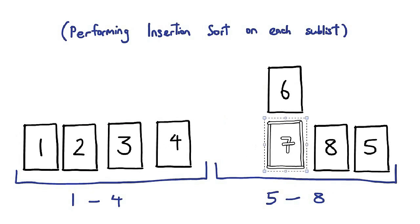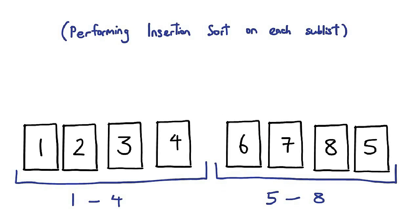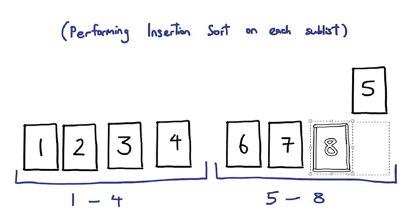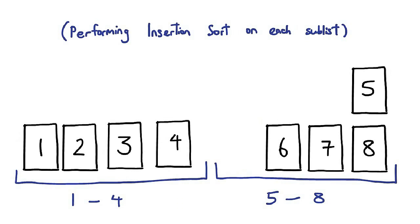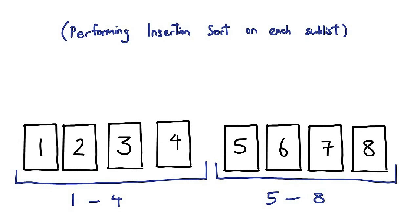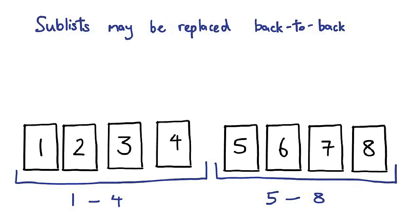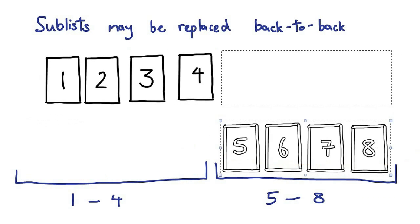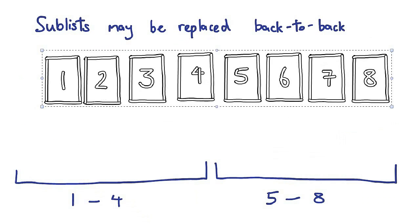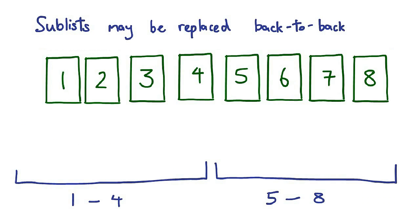And the way in which I created my buckets makes it easy to put everything back together. When 1, 2, 3, 4 eventually get sorted, and when 5, 6, 7, and 8 eventually get sorted, I can just put them back to back and I will get a sorted full list.